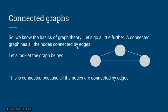A connected graph has all the nodes connected by edges. So you can see that it's all connected. If we had a node here that's not connected, that's an unconnected graph. All right, let's look at the graph below. We did that, and I just explained why.